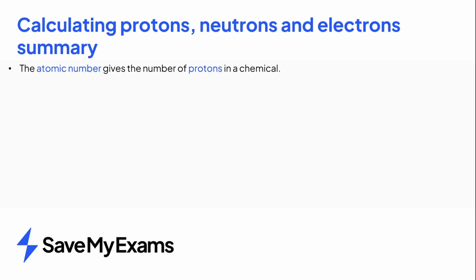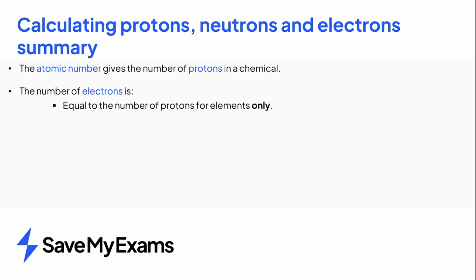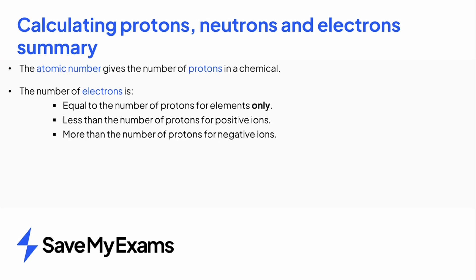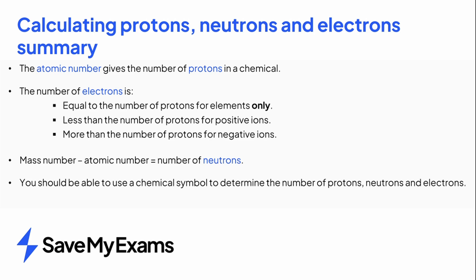The atomic number tells you the number of protons. The number of electrons is equal to the number of protons, but this is only for elements. For a positive ion, the number of electrons is less than the number of protons. For negative ions, the number of electrons is more than the number of protons. The number of neutrons is calculated by doing mass number minus atomic number. You should be able to use a chemical symbol to determine the number of protons, neutrons, and electrons for any element or ion.